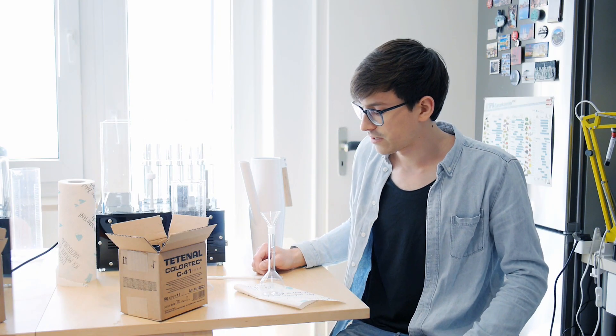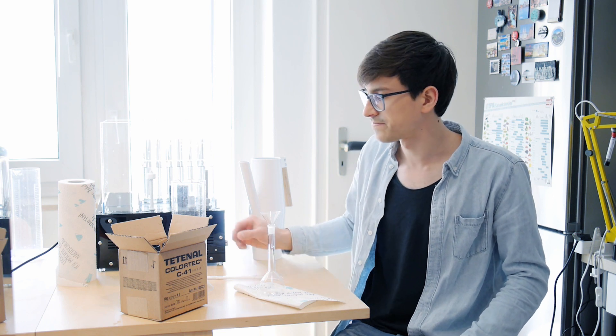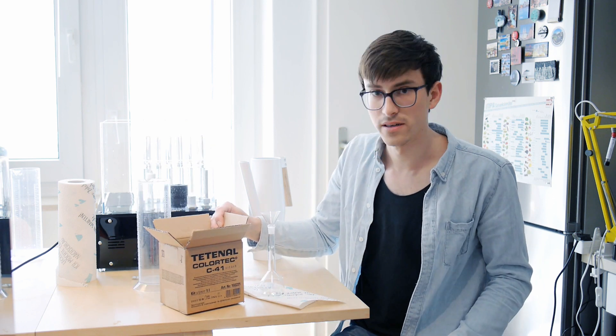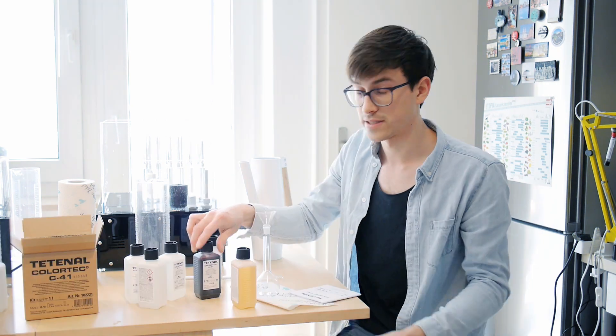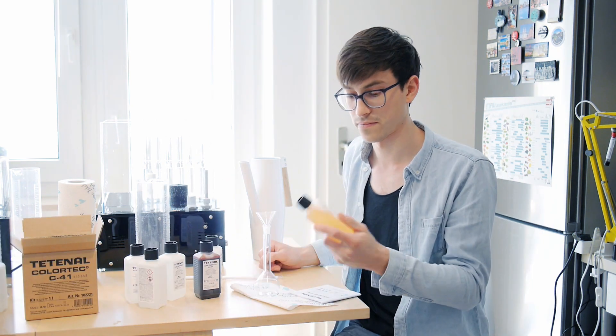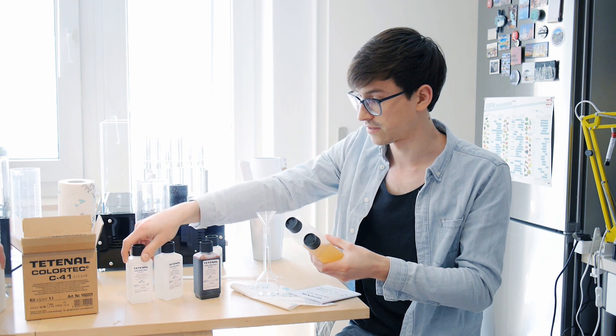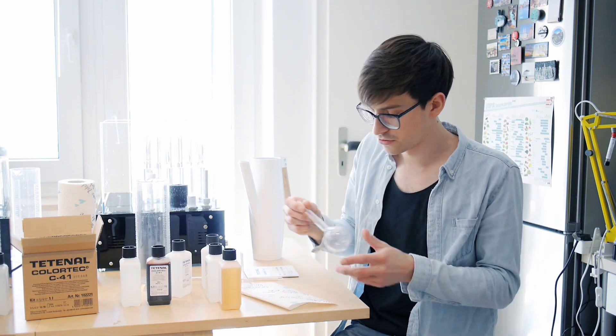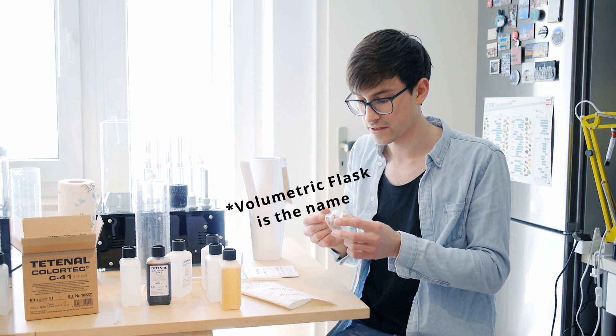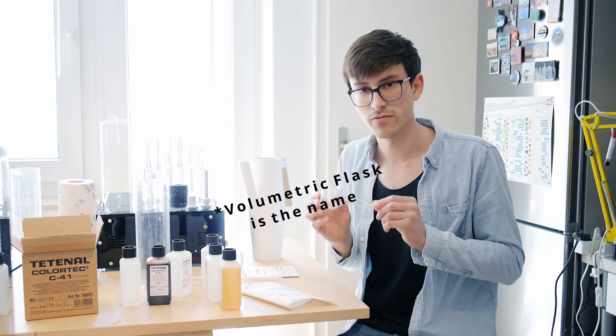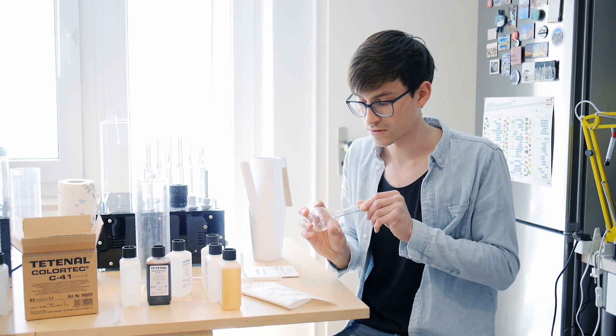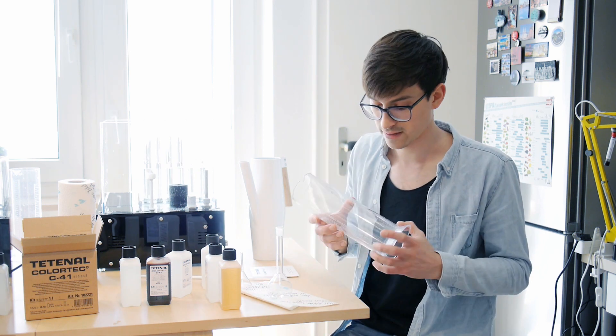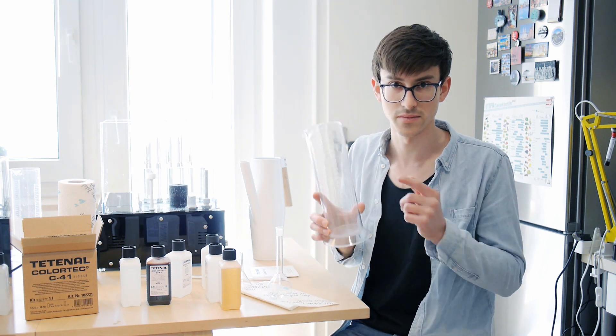Okay, so while the machine is heating up we can already set up the chemistry. I have here the titan oil C41 kit. Let's start with the color developer. This comes in three different parts that we have to mix together. I like to use these things here, so with this you can measure very exact volumes, which is much more exact than using for example something like that.